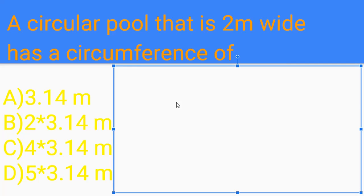So we know that wide means diameter, so the diameter would be 2 meters. And to find circumference, we would do pi times 2 meters, so our answer would be 2 times 3.14 because 3.14 is pi. So our answer is B.